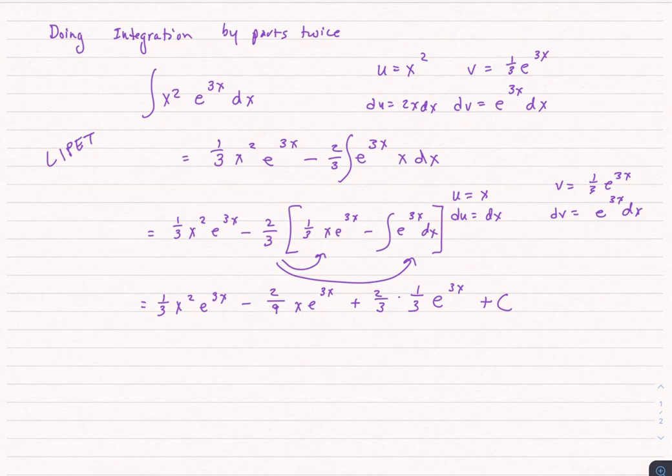And I think I've actually made an error here. Yes, I forgot this one third. So this is going to actually be an extra 1 third in here. So this is going to work out to be 1 third x squared e to the 3x minus 2 ninths x e to the 3x plus 2 over 27 e to the 3x plus C.